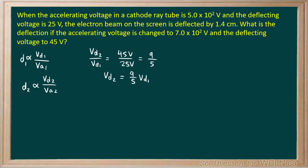Now for the accelerating voltages: the second accelerating voltage over the first accelerating voltage is 700 volts over 500 volts, which reduces to 7 fifths. So the second accelerating voltage is 7/5 of the first accelerating voltage.